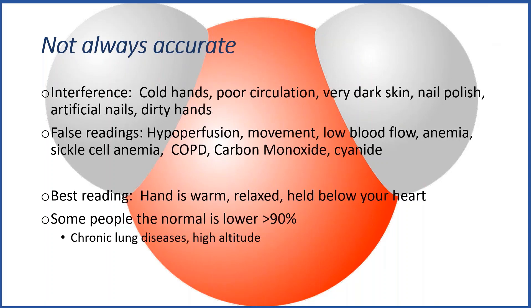It's not always accurate — there can be interference. Cold hands, poor circulation, anything that interferes with that light: nail polish, very dark skin, artificial nails, mud on your hands. You can also have a false reading. Hypoperfusion — you don't have a lot of blood flow. Maybe you're moving your hands, or you might be anemic. Carbon monoxide poisoning can mimic oxygen, so it looks like your oxygen saturation is high but it's actually not. Your best reading is when your hand is warm, relaxed, and below the level of your heart.